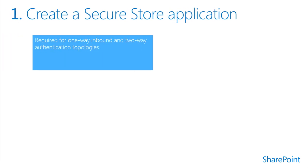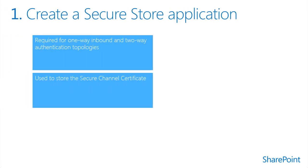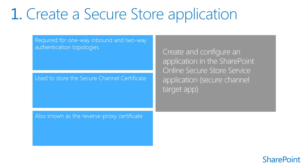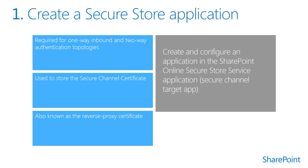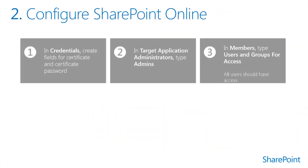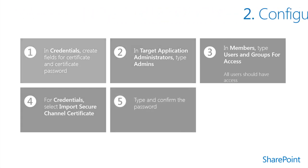When you configure SharePoint Online for a hybrid environment that provides search or business connectivity services functionality, you must first acquire a secure channel certificate. Then you must create and configure a target application in the secure store service application in SharePoint Online to store the certificate and to enable it to be used by SharePoint Online services. This target application is referred to as the secure channel target app. The five steps provided in this slide are designed to help show how to create the secure channel target app in SharePoint Online.